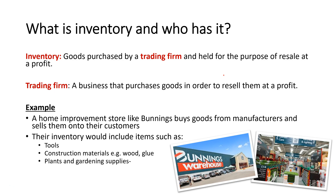An example of this would be a store like Bunnings. Their inventory would include many different items — in fact tens of thousands — but might include things like tools, construction materials, plants, gardening supplies, and even things like playground equipment, which is all part of the inventory of Bunnings.